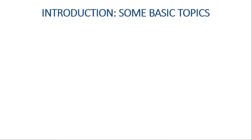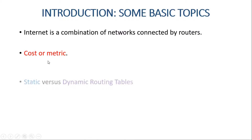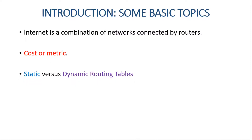Before beginning this chapter, let us discuss some basic topics. We already know that the internet is a combination of networks connected by routers. When a datagram goes from a source to a destination, it will probably pass through many routers until it reaches the router attached to the destination network. The next topic is cost or metric — values used by routers to find the best path to a destination network.